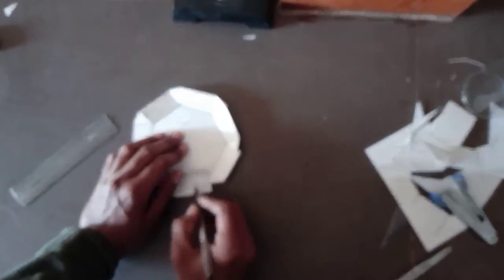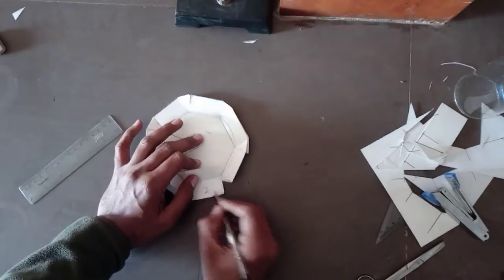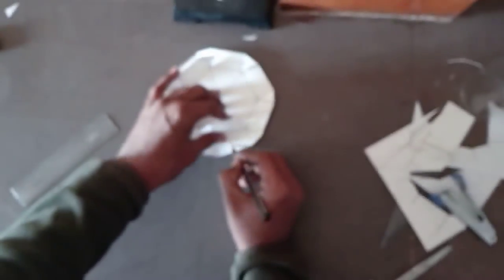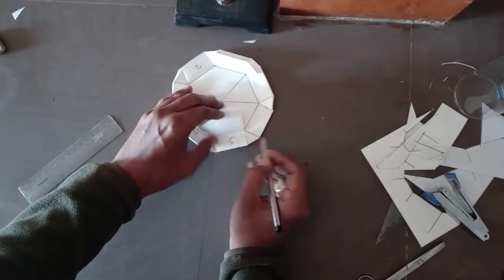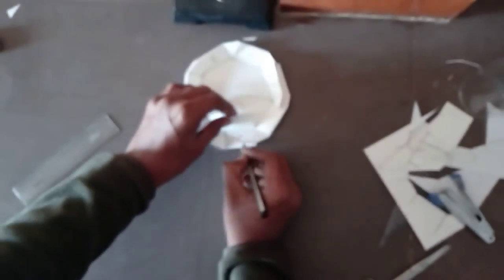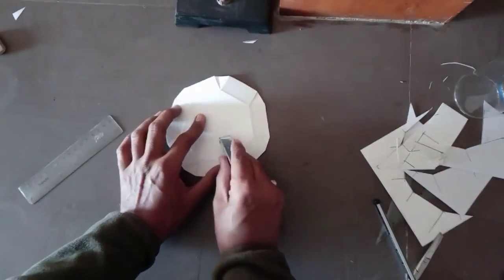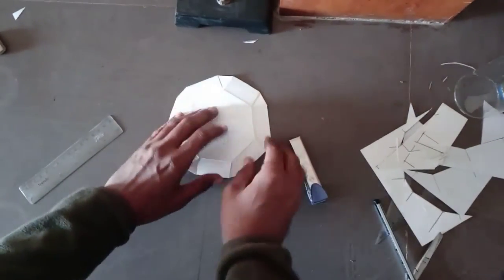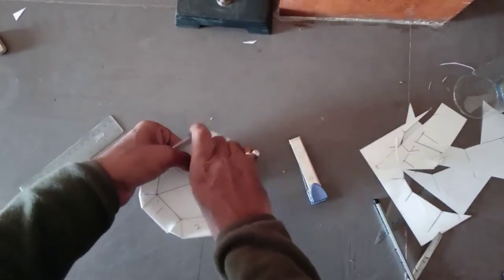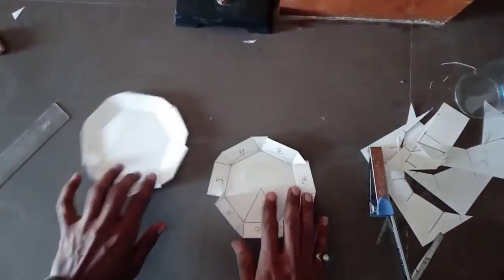Now remove the stapler pin. We can put numbers on the flaps. Now separate both the halves.